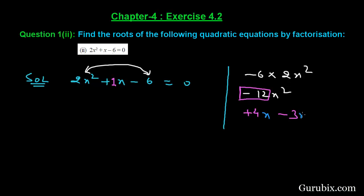We shall write x with those 4 and -3, so we have split the middle term. This is +4x - 3x. The equation becomes 2x² + 4x - 3x - 6 = 0.